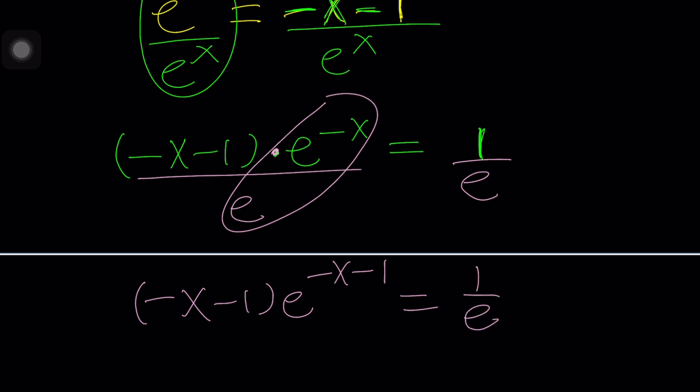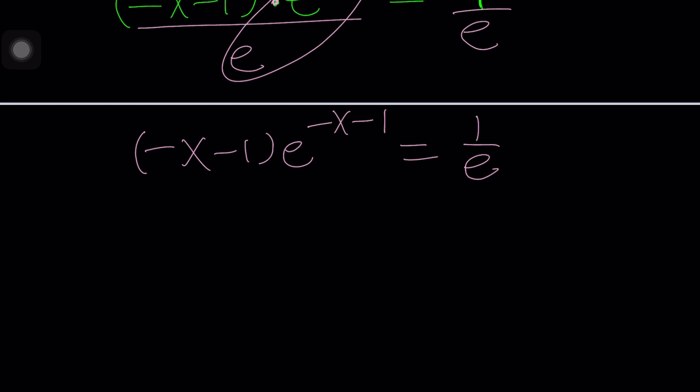We have our Lambertable product, which is the product log. So whenever you have something T E to the T like this, you can apply Lambert's W on both sides, and you can get a T out of this. So that's Lambert's W function.